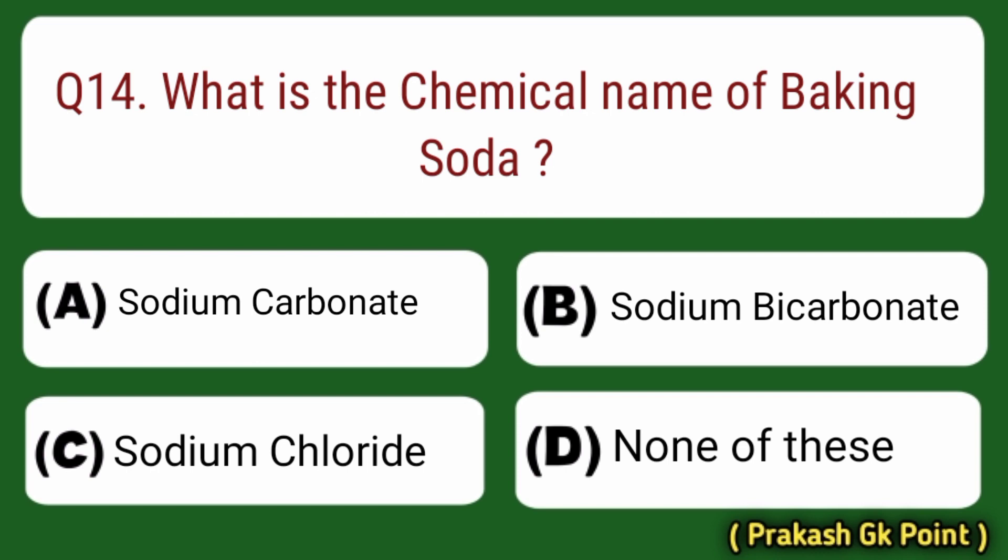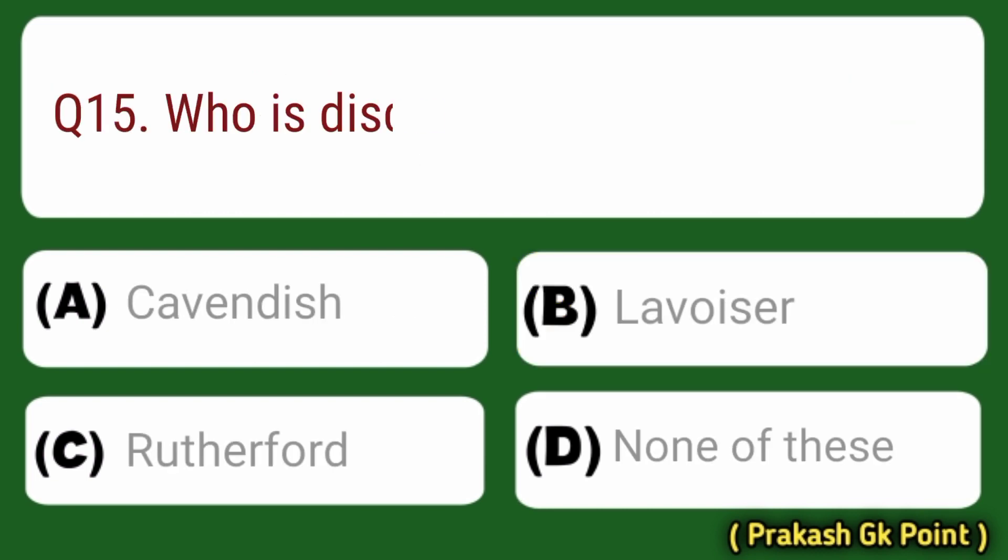Next question: what is the chemical name of baking soda? Answer: Option B — Sodium Bicarbonate.